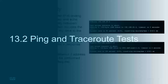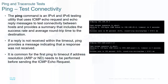Ping and Traceroute tests: The ping command is an IPv4 and IPv6 testing utility that uses ICMP echo requests and echo reply messages to test connectivity between hosts, providing a summary that includes the success rate and average round-trip time to the destination. If a reply is not received within the timeout, ping reports that a response was not received. It is common for the first ping to time out if address resolution, ARP or Neighbor Discovery, needs to be performed before sending the ICMP echo request. If you lose the first ping but get the last four, it's because it's the first time contacting that device.